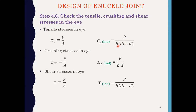Sigma T induced = P / [B × (D0 − D)], where D0 is the outer diameter of the eye, D is the diameter of the knuckle pin, and B is the thickness of the single eye. This Sigma T induced should be less than Sigma T permissible to avoid tensile failure of the single eye. Similarly, Sigma CR induced and Tau induced are calculated and should be less than their respective permissible values to avoid crushing and shear failure.